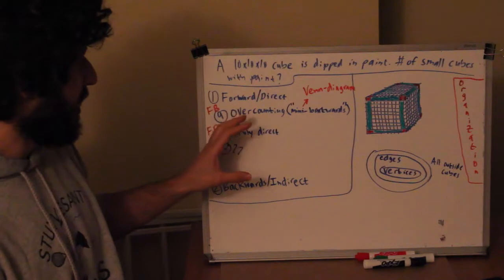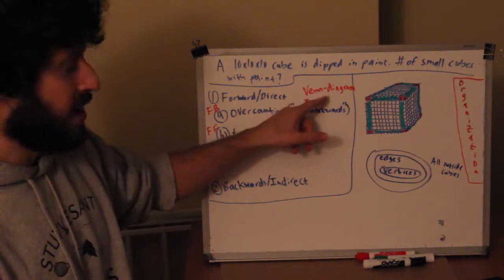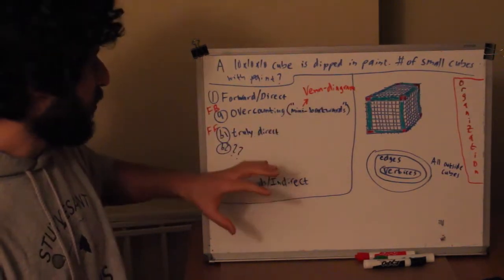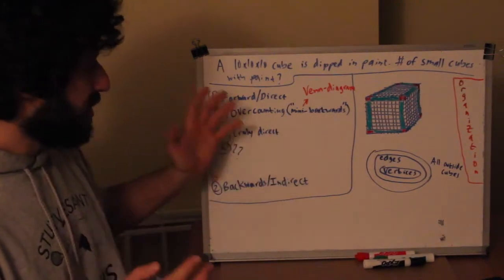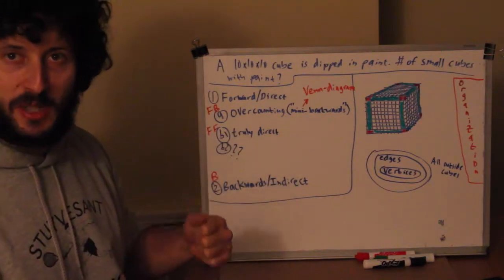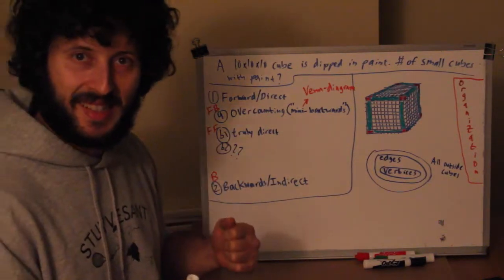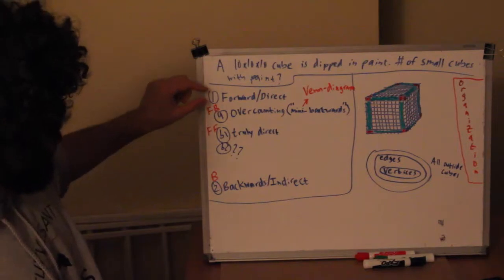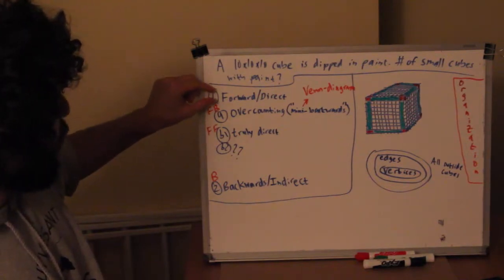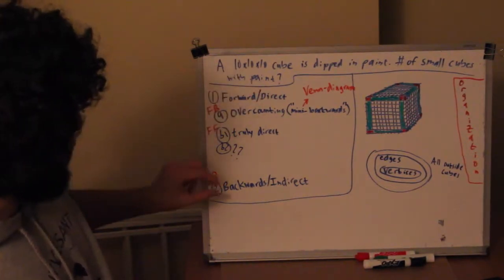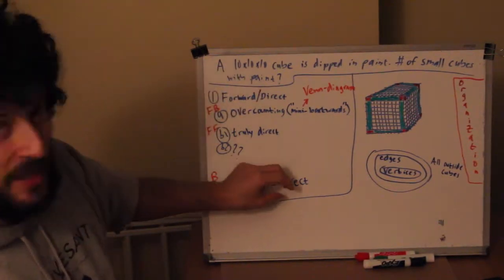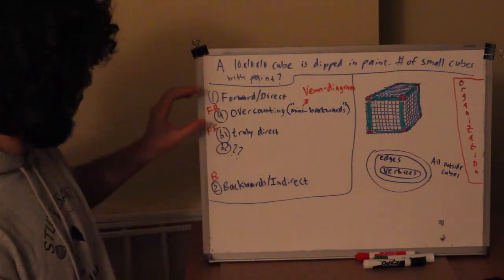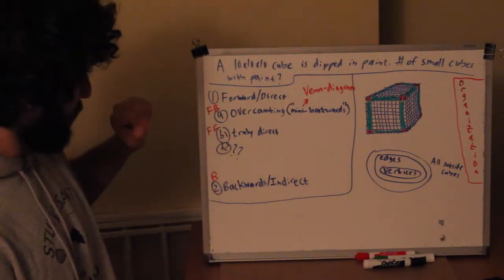This is also going to touch on Venn diagrams, which we've covered, so hopefully all of that has helped solidify some skills we've already seen. We're going to have some forward or direct approaches and then a backwards or indirect approach. Let's start with the forward approach.